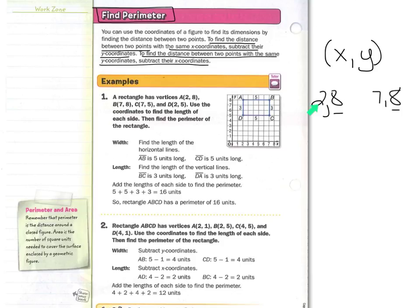If you didn't draw the figure out, you could have simply subtracted the x-coordinates. The same thing would be true for CD. Point C is 7, 5 and point D is 2, 5. Those have the same y-coordinates, so again you would subtract the x-coordinates. 7 minus 2 is 5.